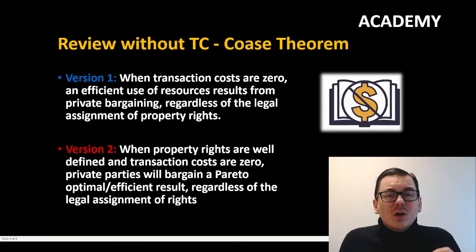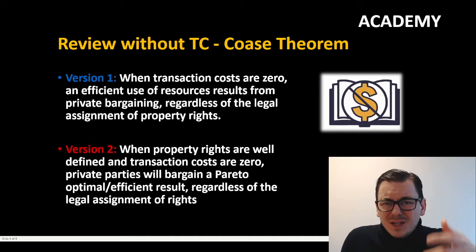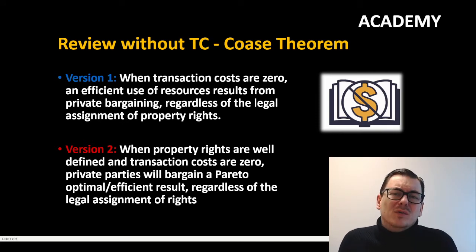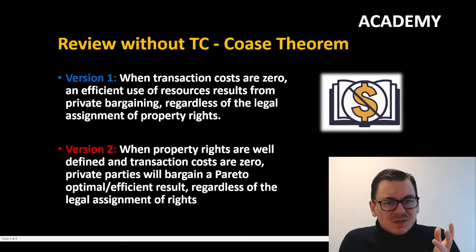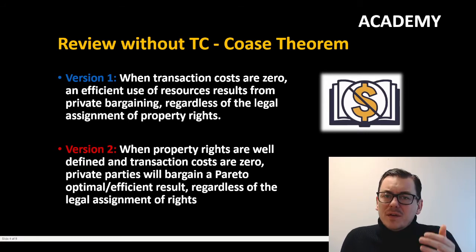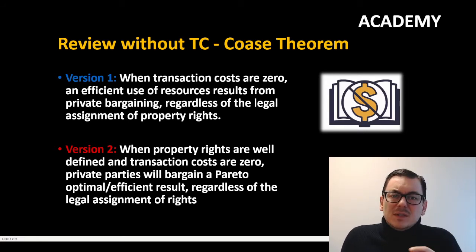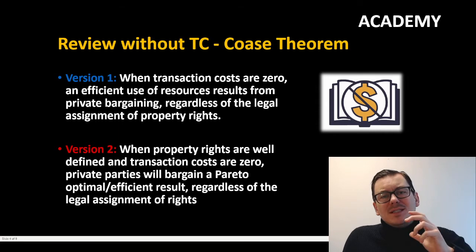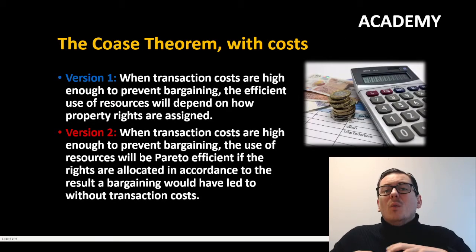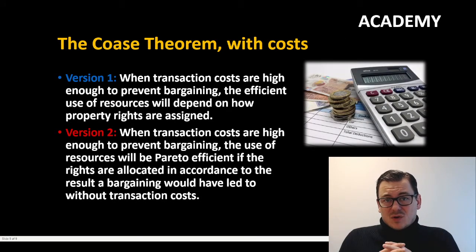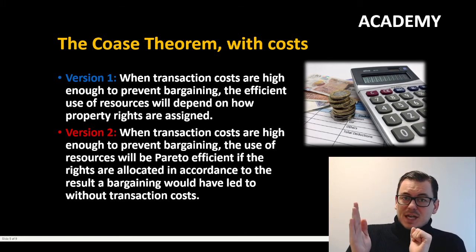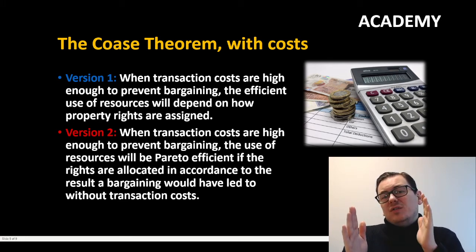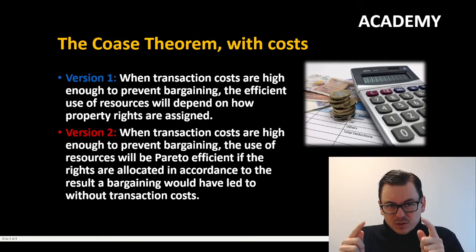When it comes to reality, one of the critique points on the Coase theorem is when we actually have zero transaction costs. Therefore, these authors stipulated another version where we do have transaction costs — now we are in the range between zero transaction cost and when they are too high.